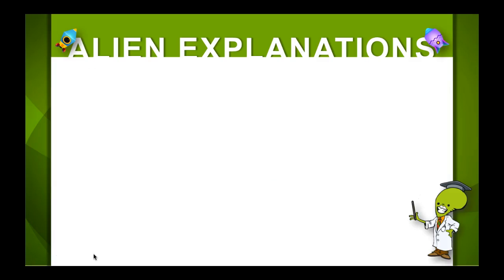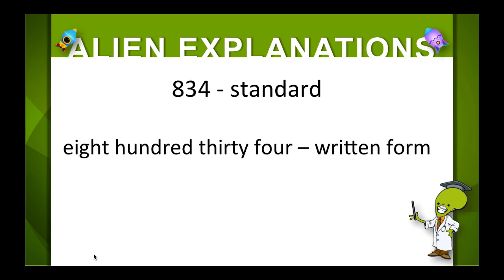Let's review what we know about place value. We're going to start with this number 834 and this is written in standard form. This is how we're used to seeing it. Then we have our written form which is 834 written with words.